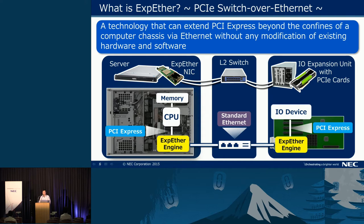XPS Ether can extend PCI Express beyond the confines of a computer chassis via Ethernet. The most important thing is transparency. You can see the server with XPS Ether and a NIC that has an XPS Ether engine. This engine converts PCI Express packets to Ethernet packets. On the other side, an I/O expansion unit with a PCI Express card also has an XPS Ether engine that converts Ethernet packets back to PCI Express TLP. So we can place the I/O device on the remote side. This is the basic concept.